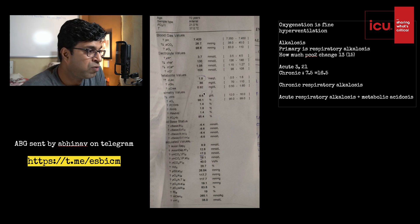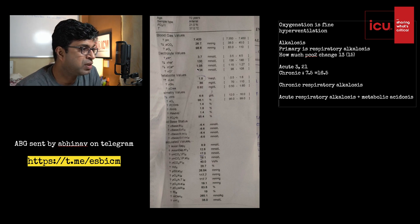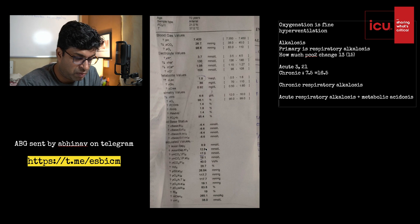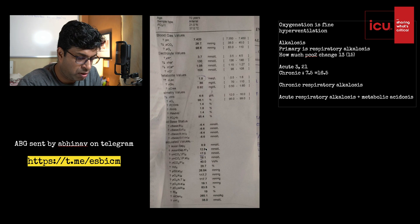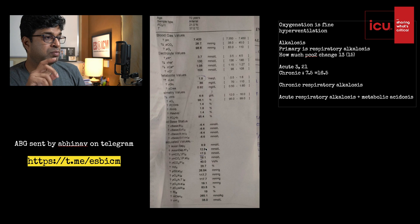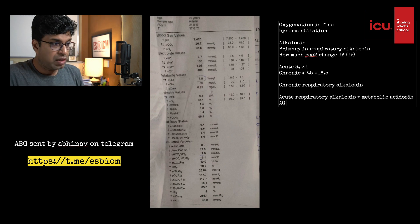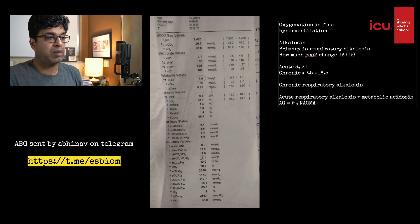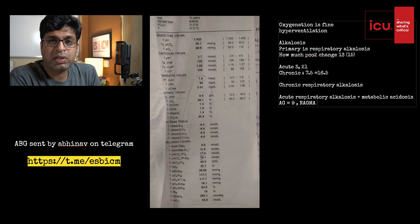If metabolic acidosis is present, we need to check the anion gap. Sodium is 130, chloride is 104, and bicarbonate is 17. Anion gap = 130 − (104 + 17) = 9, which is a normal anion gap. So this is a normal anion gap metabolic acidosis (NAGMA).